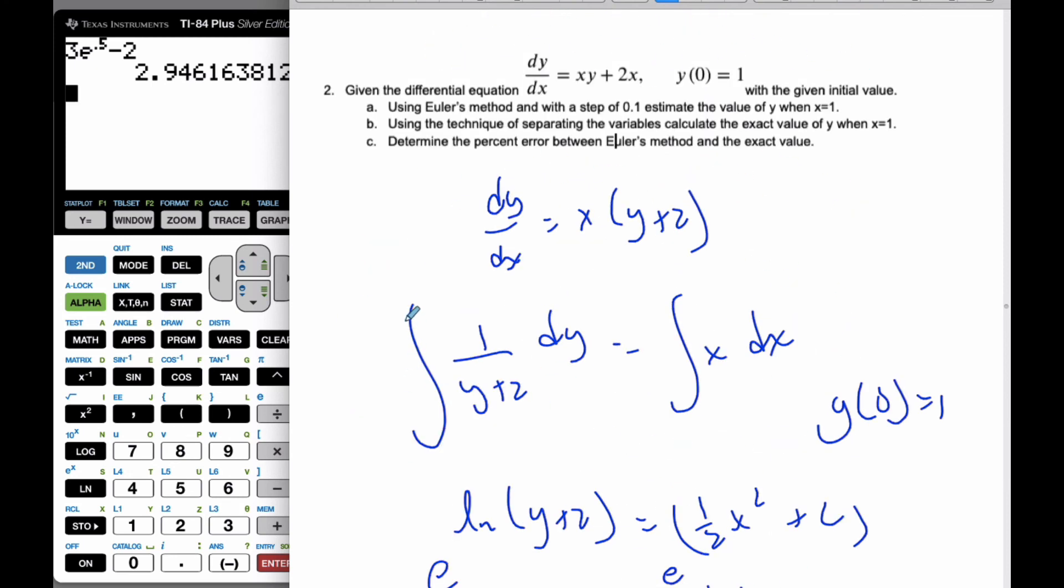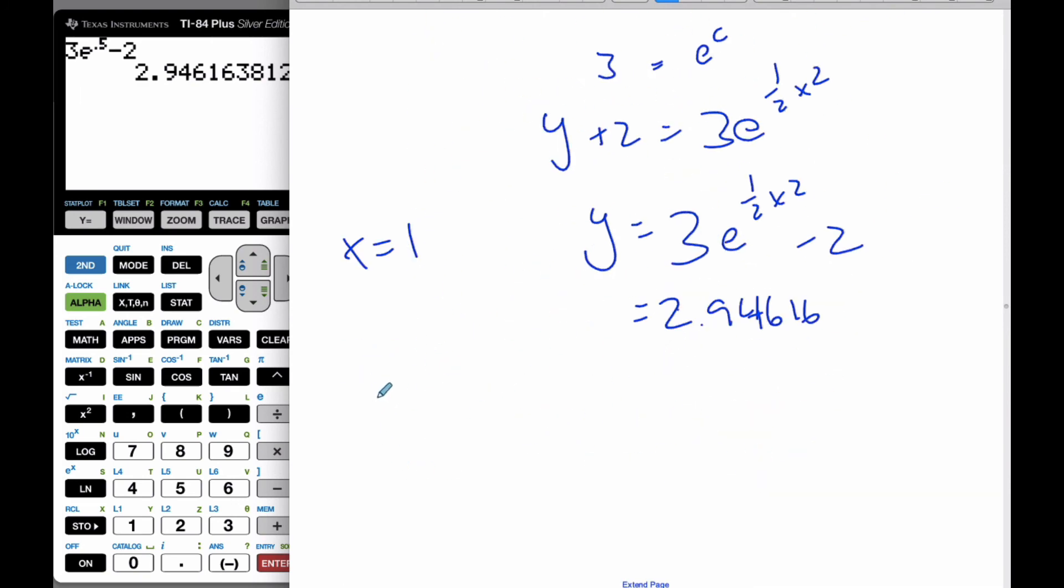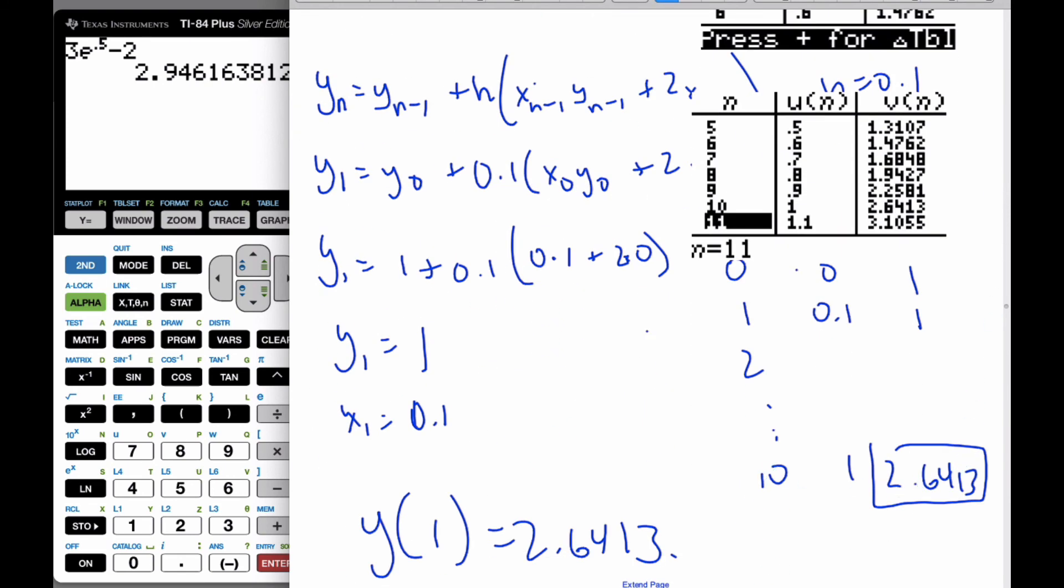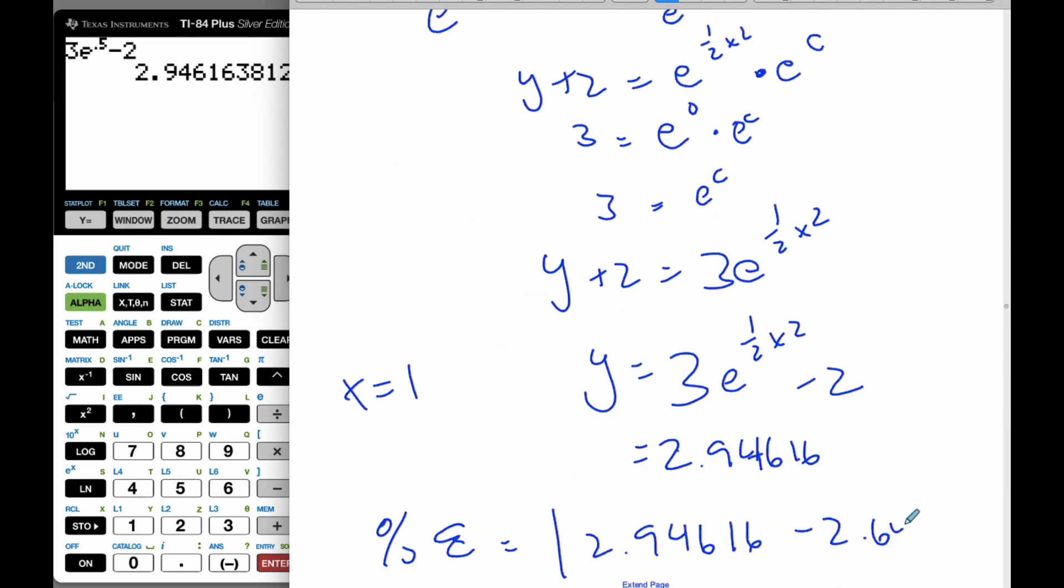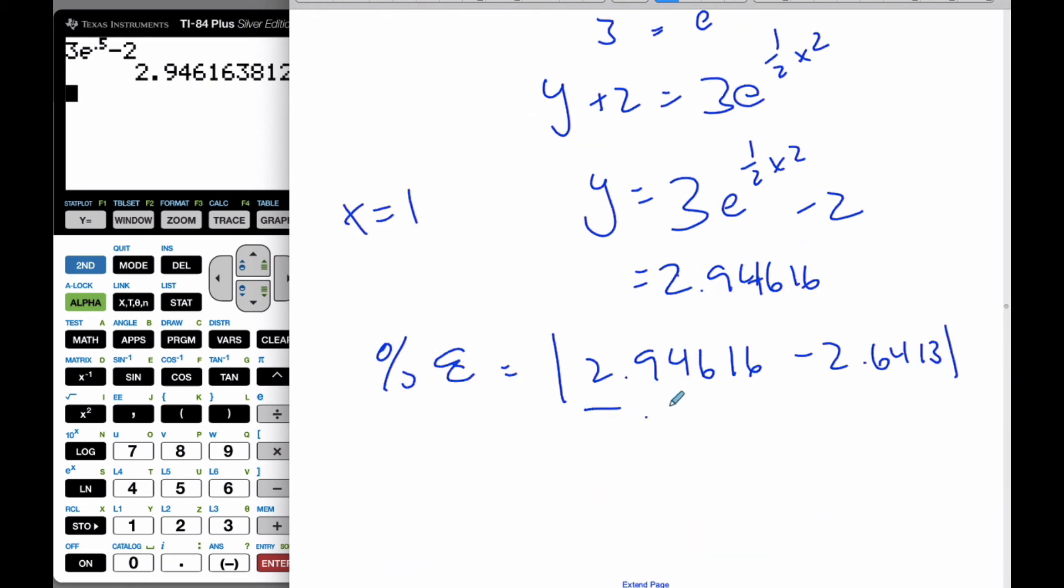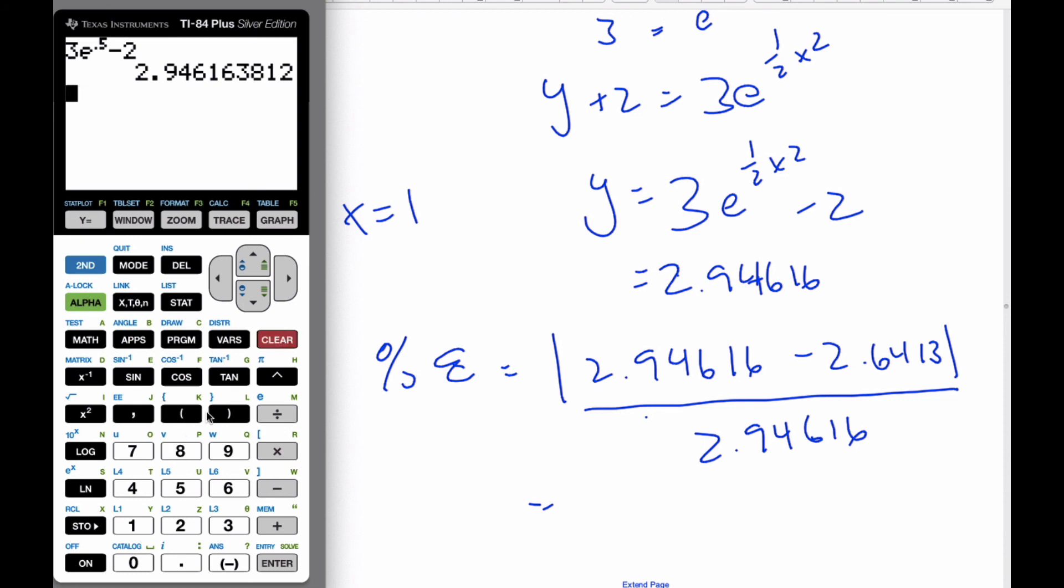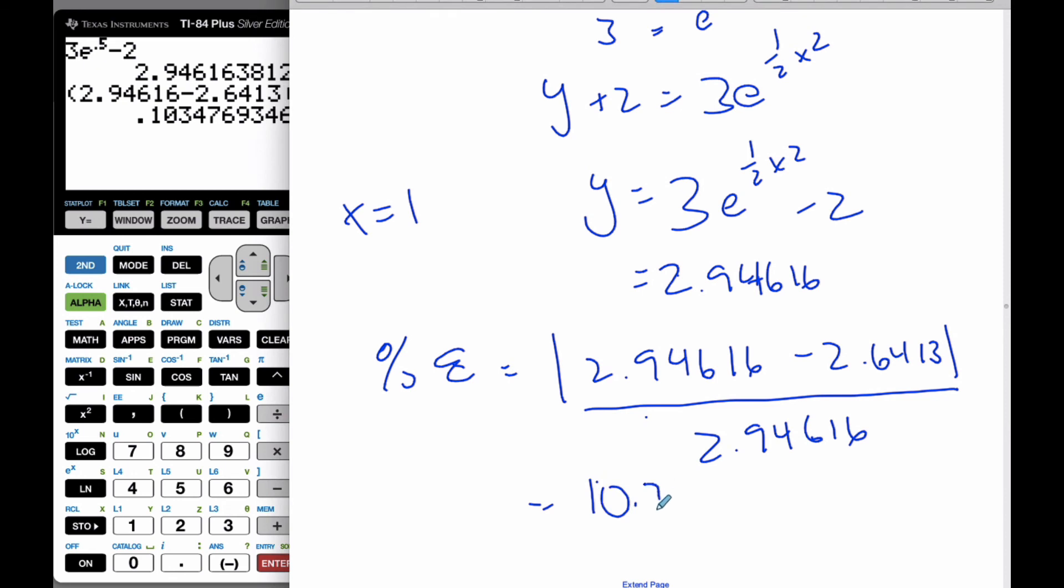And if I want, then part C finally says determine the percent error between the two. Well, my percent error is going to be the absolute value of the two of these numbers subtracted. And this answer was 2.94616 minus 2.6413 divided by 2.94616. And when I do that calculation, I always do the absolute value of the sign in my head. So I get it's off by 10.3 percent is the percent error.